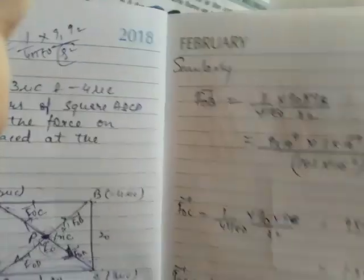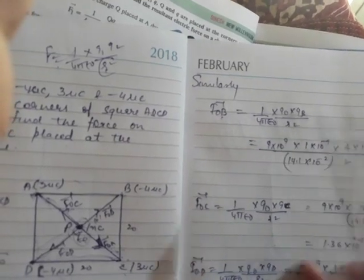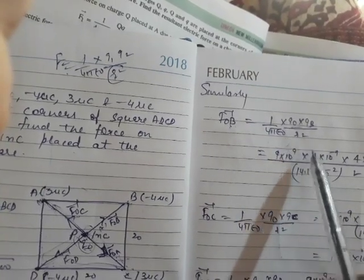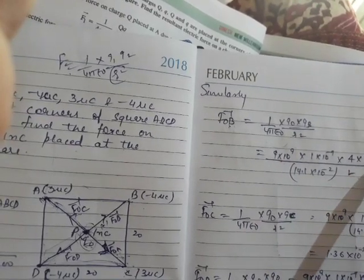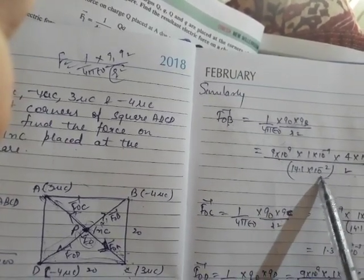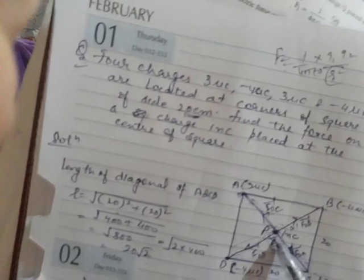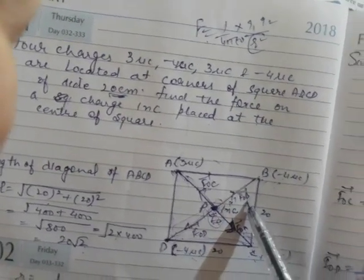Now find the force on Q naught due to charge at B, which is minus 4 micro coulomb. F_B = 9×10⁹ × (1×10⁻⁹) × (4×10⁻⁶) / (14.1×10⁻²)² = 1.81 newtons. For direction: Q naught is positive and Q_B is negative — unlike charges attract — so F_B acts along the line from P toward B, that is along PB.